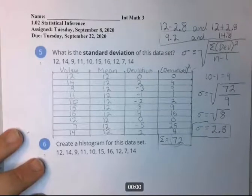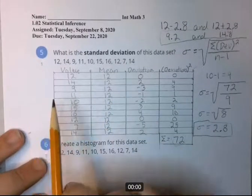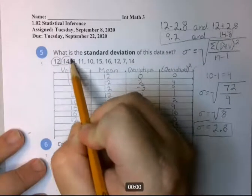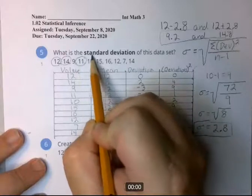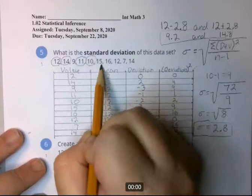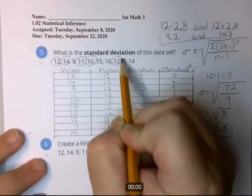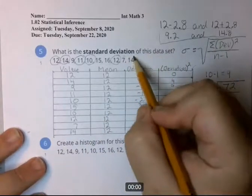So this is the range in which 68% of the values will fall. So let's test that out. Let's circle the numbers up here that are between 9.2 and 14.8. So 12 is, 14 is, 9 is below 9.2, 11 is, 10 is, 15 is above 14.8, so is 16, 12 is in that range, 7 is below 9.2, and 14 is.